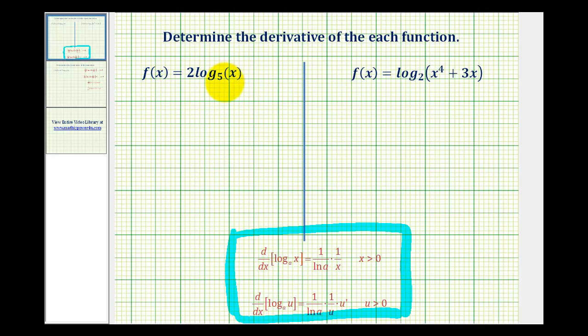Looking at our first example, notice that the base is 5, which means looking at our formulas here, a is equal to 5. And because we just have x here, we do not need to apply the chain rule.